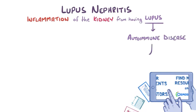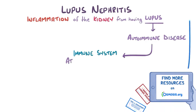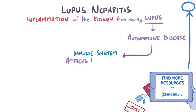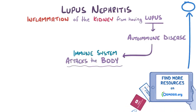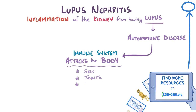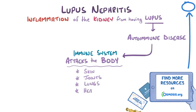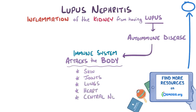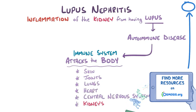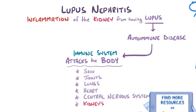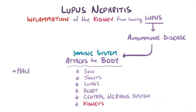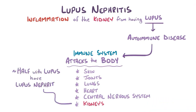Lupus is an autoimmune disease in which the immune system attacks various parts of the body, including the skin, the joints, lungs, heart, central nervous system, and of course the kidneys. In fact, about half of all individuals with lupus develop some form of lupus nephritis.